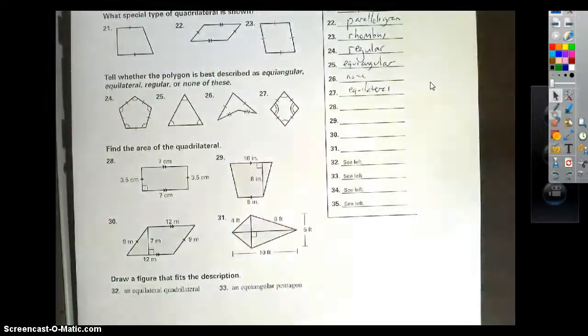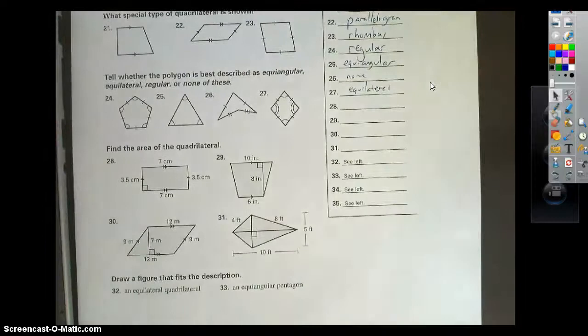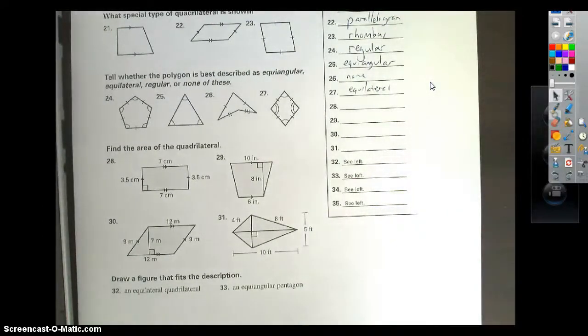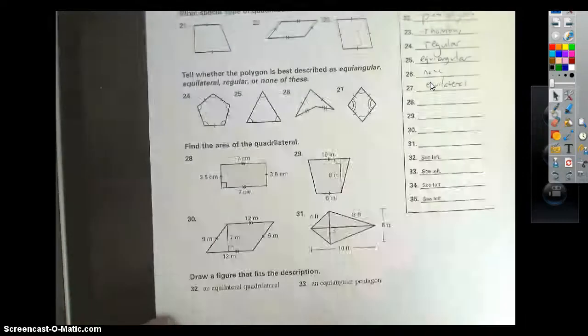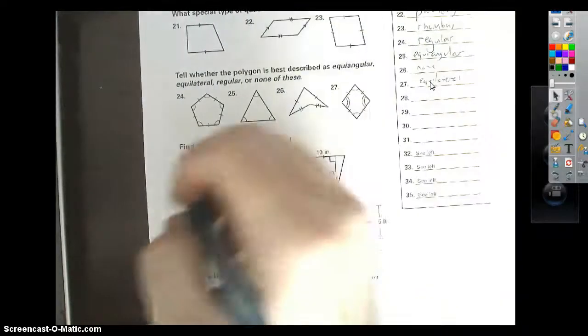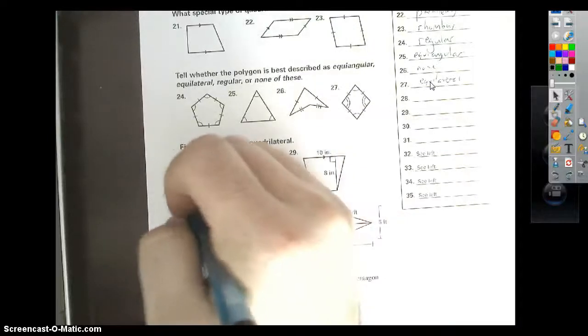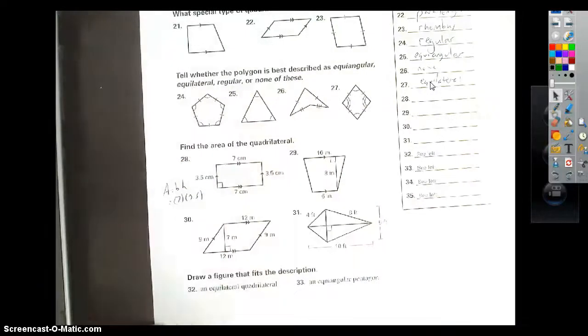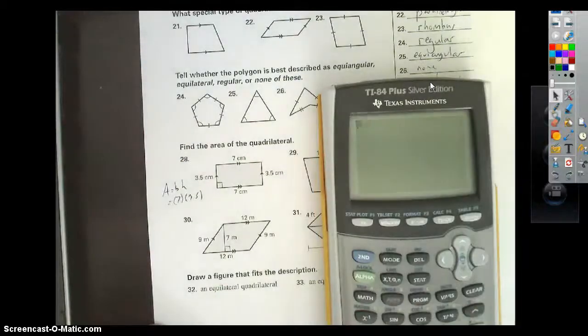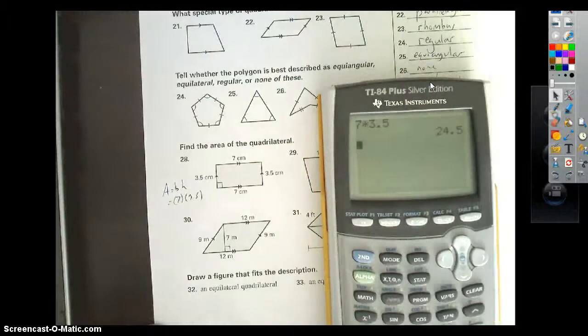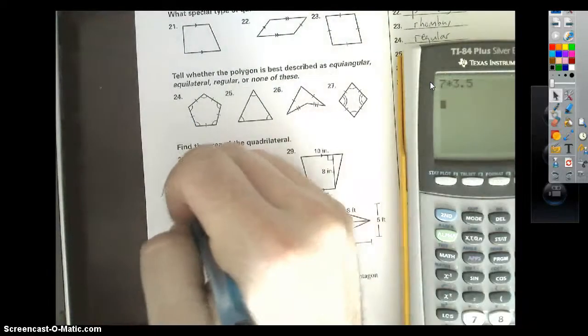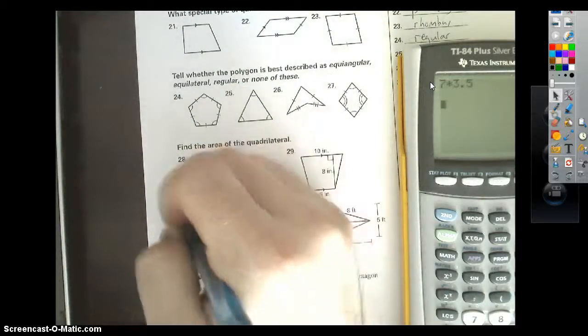All right. Looking good so far. Almost done. Number 28. We are looking at an area formula here. So what I'm looking at doing is, it's a rectangle. I'm going to say base times height, which is seven times 3.5. I'm going to hesitate to bust out a calculator. And I'm getting 24.5 centimeters squared.